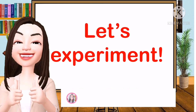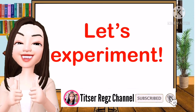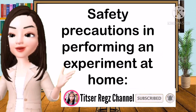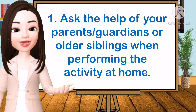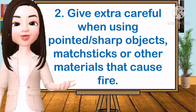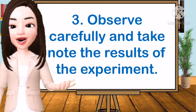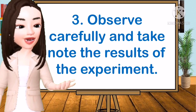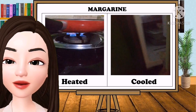Now, let's have an experiment. Observe the changes in the properties of materials when exposed to different temperatures. When performing an experiment at home, observe the following safety precautions: first, ask the help of your parents, guardians, or older siblings; second, be extra careful when using pointed or sharp objects, matchsticks, or other materials that can cause fire; and third, observe carefully and take note of the results of the experiment. Let's observe what will happen to the materials when heated or cold.